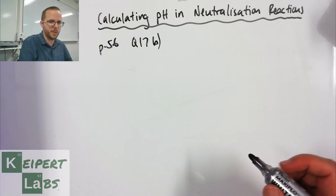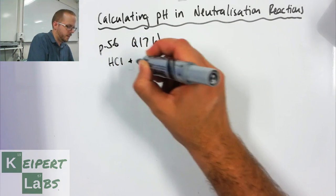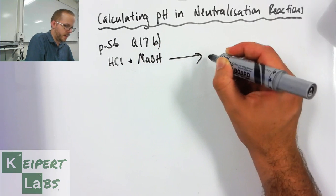So when we're dealing with this particular question, we've got the reaction between hydrochloric acid and sodium hydroxide to make sodium chloride and water.